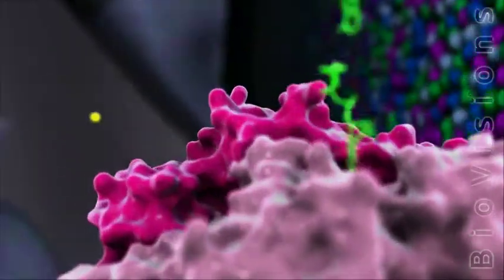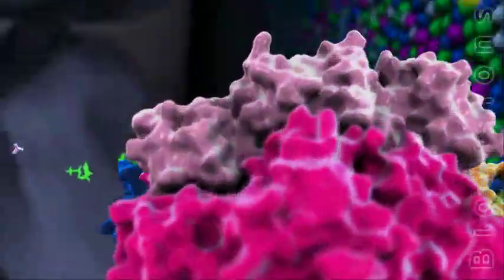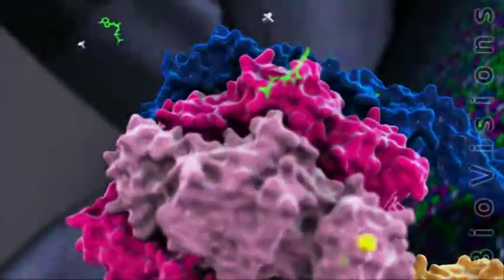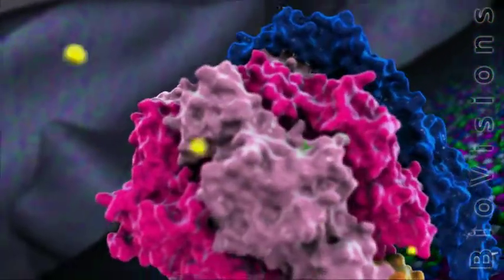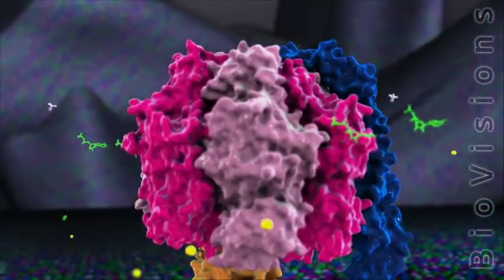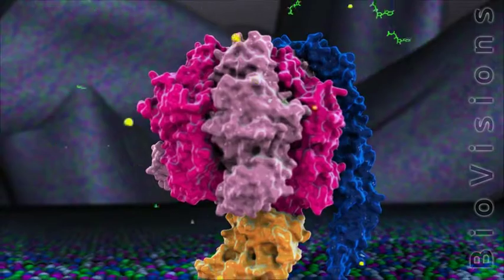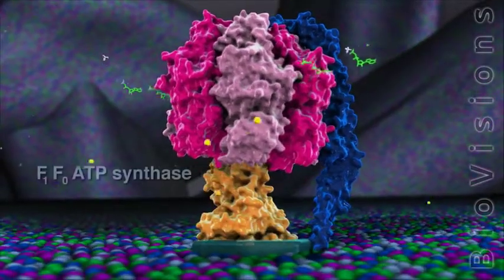The cells in your body have molecular machines that require energy, and a molecule called ATP is the primary energy source. To make ATP, cells have their own built-in power plant called the F1-F0 ATP synthase.